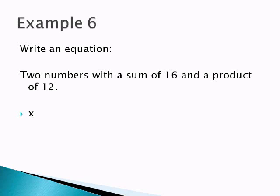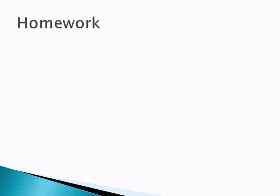And to get another number which added to this is 16, we learned a couple examples ago, we can just take 16 minus x. Well, there are our two numbers. If I want their product to be 12, it means I'm going to multiply these two numbers to get a product. So we have x times 16 minus x, and I want that to be equal to 12. So there is my equation for two numbers with a sum of 16 and a product of 12.